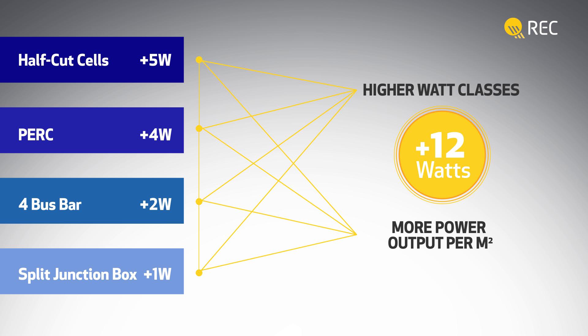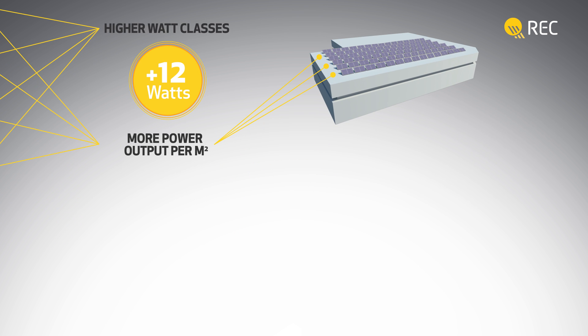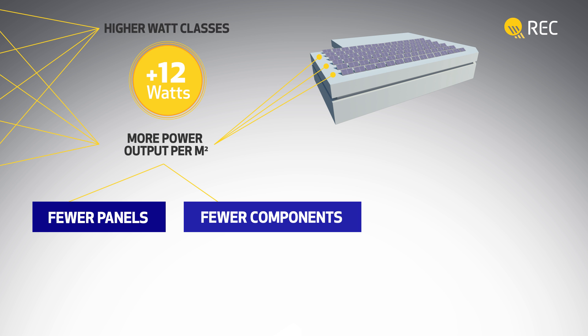So, in areas with limited space, such as rooftops, you can fit in more power generation capacity, making maximum use of available space, and getting the most out of every installation. By delivering more power output per square meter, fewer REC Twin Peaks panels are required to achieve the same power generation capacity.